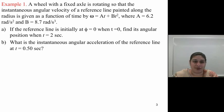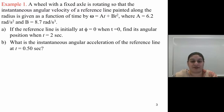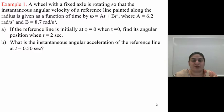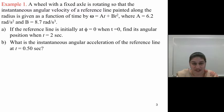Now let's do an example. A wheel with a fixed axle is rotating such that the instantaneous angular velocity of a reference line painted along the radius is given as a function of time by ω = at + bt², where a = 6.2 radians per second squared and b = 8.7 radians per second cubed. The reference line is initially at φ = 0 when t = 0. Find the angular position when t = 2 seconds, and find the instantaneous angular acceleration at t = 0.5 seconds.